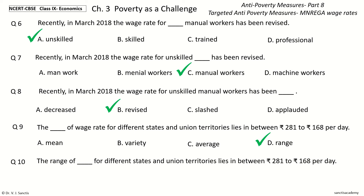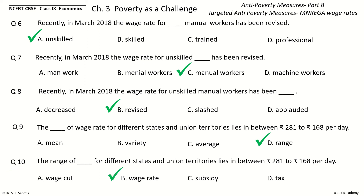Question 10: The range of Dash for different states and union territories lies in between Rs. 281 to Rs. 168 per day. The options are: Wage Cut, Wage Rate, Subsidy, Tax. The answer is Wage Rate. The range of wage rate for different states and union territories lies in between Rs. 281 to Rs. 168 per day.